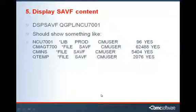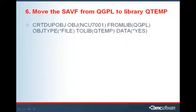Once we've completed the FTP, let's go to the I-Series and check the save file does have content in it. Here's an example of how to display the save file. Now move the file from QGPL to QTEMP. Here's the command to do this. We need to move it to QTEMP because NDI load run will be looking for the file in QTEMP.